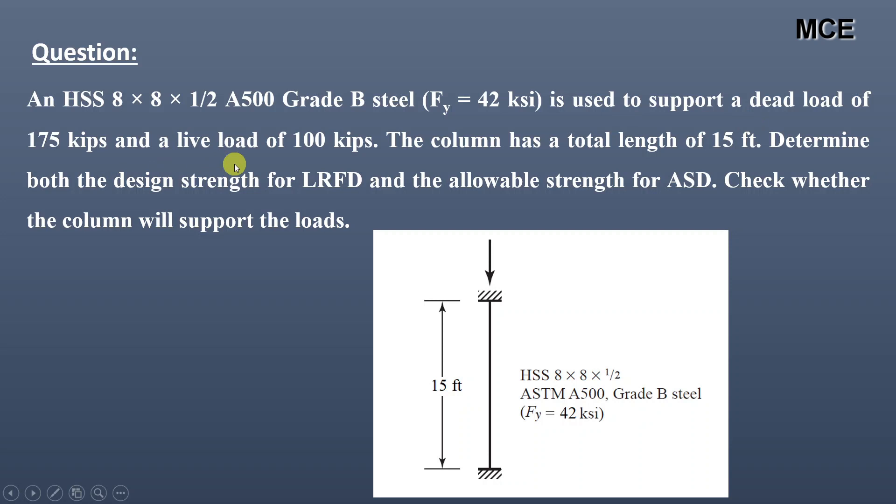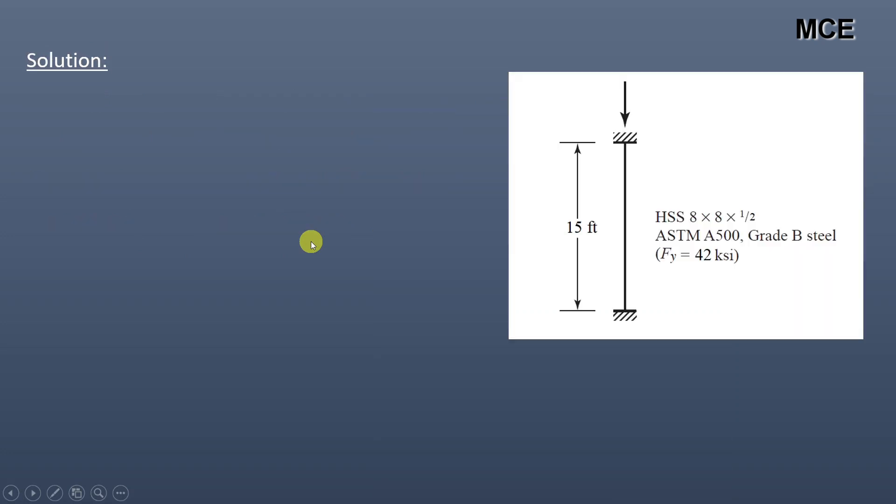The column has a total length of 15 feet. Determine both the design strength for LRFD and the allowable strength for ASD. Check whether the column will support the loads.